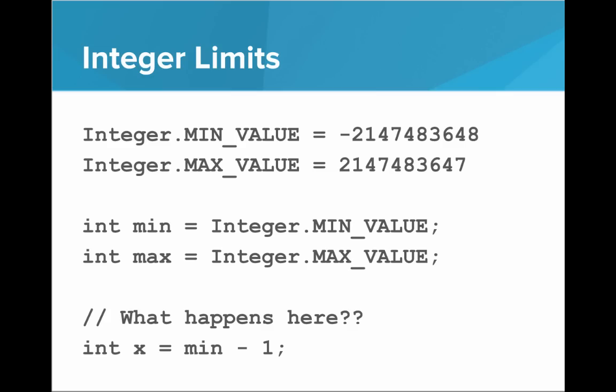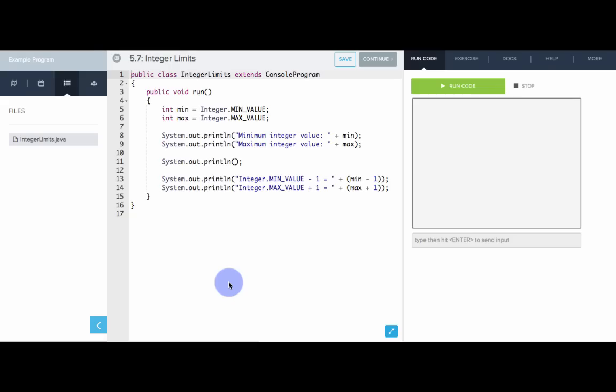So in Java, you can actually type integer dot min value, and you'll get that exact value. Integer dot max value, likewise has the highest positive value. So what do you think happens when we try to subtract one from the absolute minimum value? What would Java do there? Well, let's see what it looks like in the editor. So here we have a program that's playing around with the limits of integer representation in Java. We have the minimum value that an integer can possibly store, stored inside of min, and the maximum value that an integer could possibly store inside of max. We'll print them out and see what it is. Then we're going to try to subtract one from the minimum value and add one to the maximum value and see what happens.